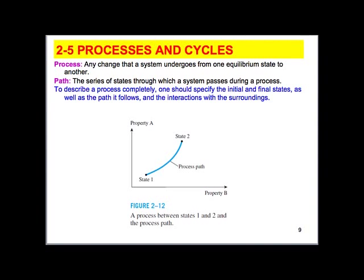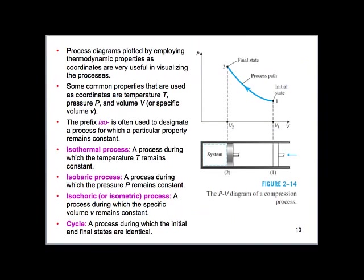Another important thing is how it gets from state one to state two. The direction or how it gets from state one to state two is called the path. Here you see another diagram showing the path. A lot of times we'll use graphs like this where we have pressure versus volume to look at and characterize what has been going on in the system between the two equilibrium states.